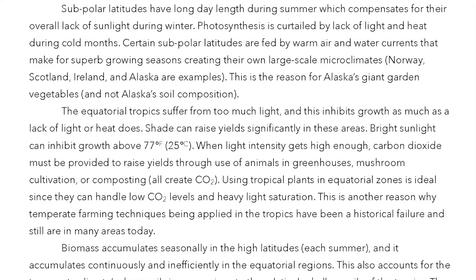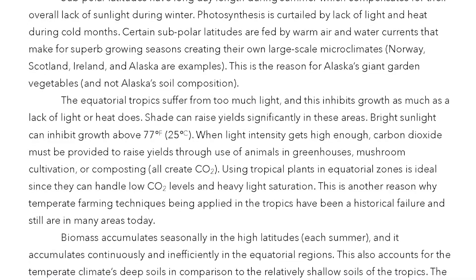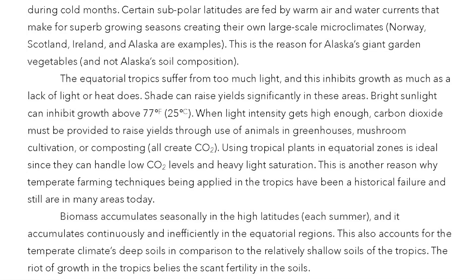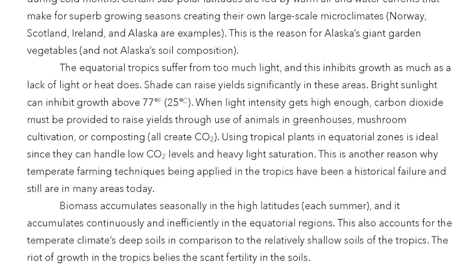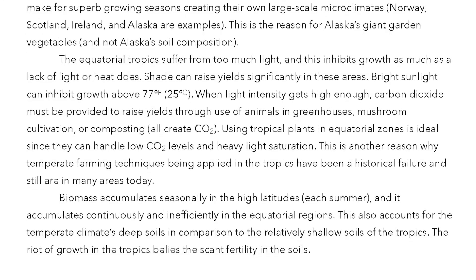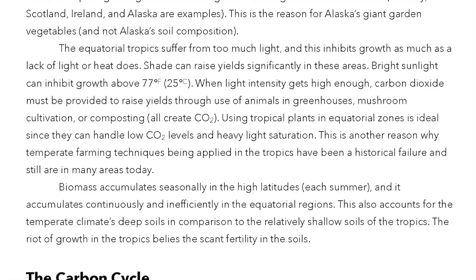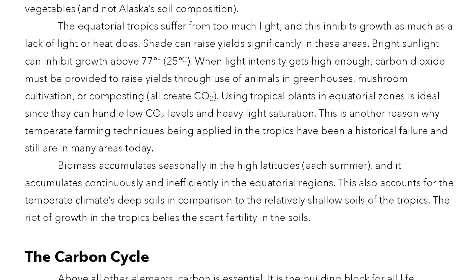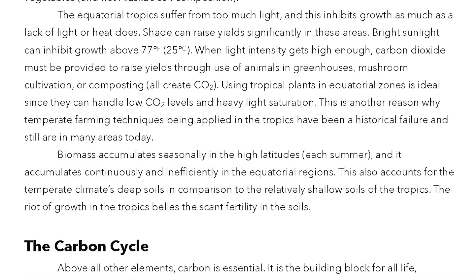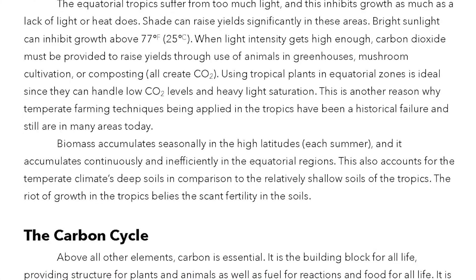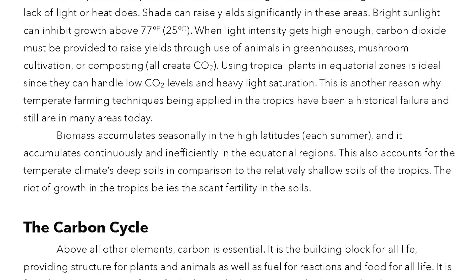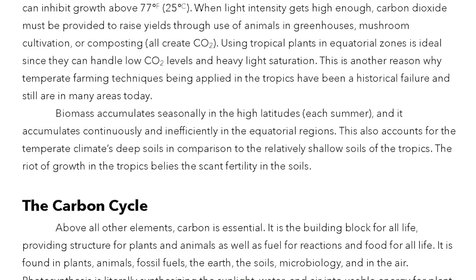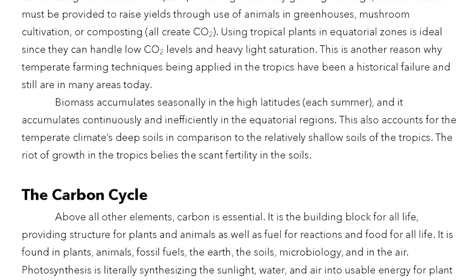Bright sunlight can inhibit growth above 77°F or 25°C. When light intensity gets high enough, CO2 must be provided to raise yields through the use of animals and greenhouses, mushroom cultivation, or composting — all of which create CO2. Using tropical plants in equatorial zones is ideal since they can handle low CO2 levels and heavy light saturation. This is another reason why temperate farming techniques applied in the tropics have been a historical failure. Biomass accumulates seasonally in high altitudes each summer and continuously but inefficiently in equatorial regions, which accounts for the temperate climate's deep soils compared to the relatively shallow soils of the tropics. The riot of growth in the tropics belies the scant fertility in the soils.